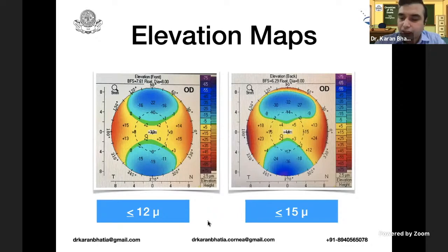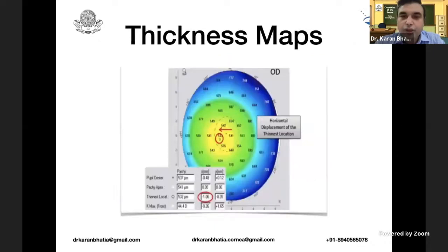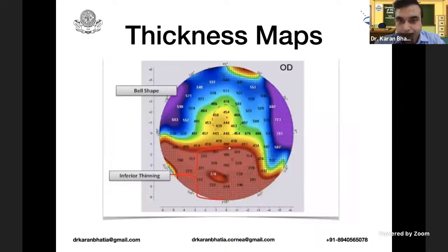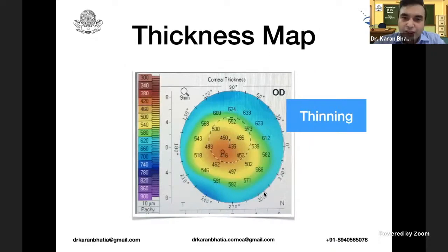Coming to the thickness maps, the thinnest location is shown in the quad map. The Y-axis deviation should be less than minus 0.5. In one example shown, the value is minus 2.33, which exceeds that threshold. A bell shape with inferior thinning can be seen. In keratoglobus, there is generalized thinning all over. A thinnest corneal value of 416 microns indicates some abnormal pathology.